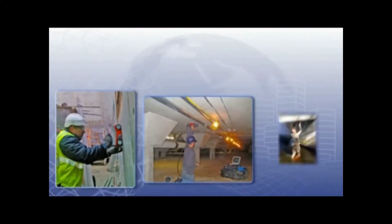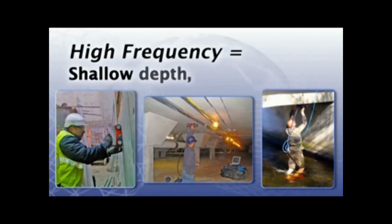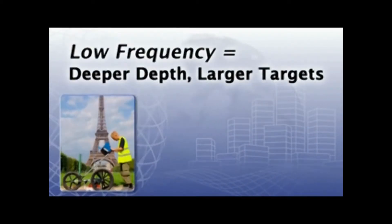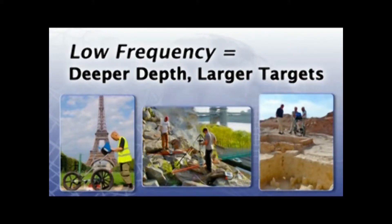Antennas come in various frequencies, depending upon your application. High frequencies are for shallow depth and small targets, ideally for concrete applications, while low frequencies are for deeper depth and larger targets, such as utility, geological, and archaeological applications.